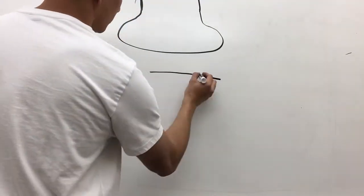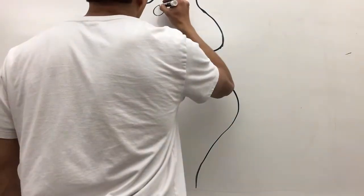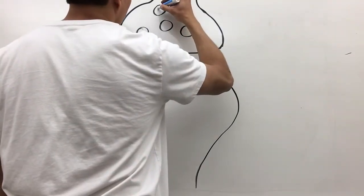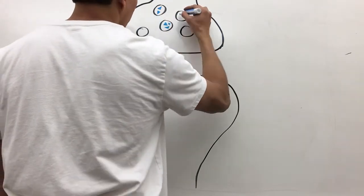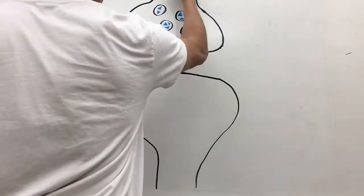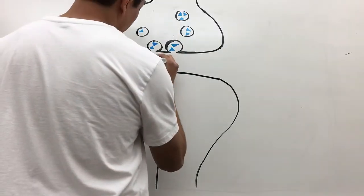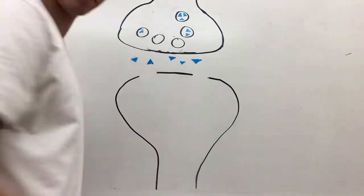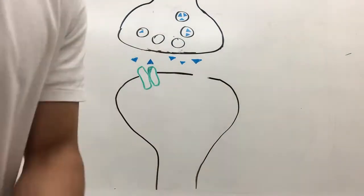We have the presynaptic neuron and the postsynaptic neuron. Here we have vesicles, and inside these vesicles we have a neurotransmitter called glutamate. When an action potential comes down from the presynaptic neuron, it will bring these vesicles to the synapse and release glutamate.